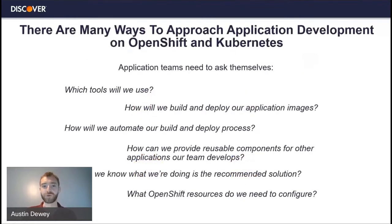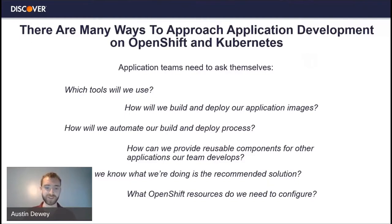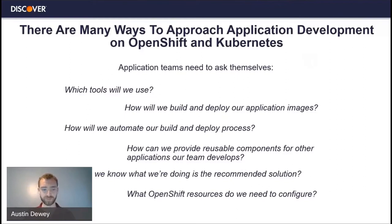There are many different ways to approach application development on OpenShift. You might have asked yourself one or all of these questions: which tools will we use? There are a lot of tools out there in the community — how do you know which are the right tools for you? How will you actually build and deploy your application images? Once you have a process in place manually, how are you going to automate that? How are you going to provide reusable components for other teams? There are a lot of different app teams in your organization — you don't want them all to reinvent the wheel.